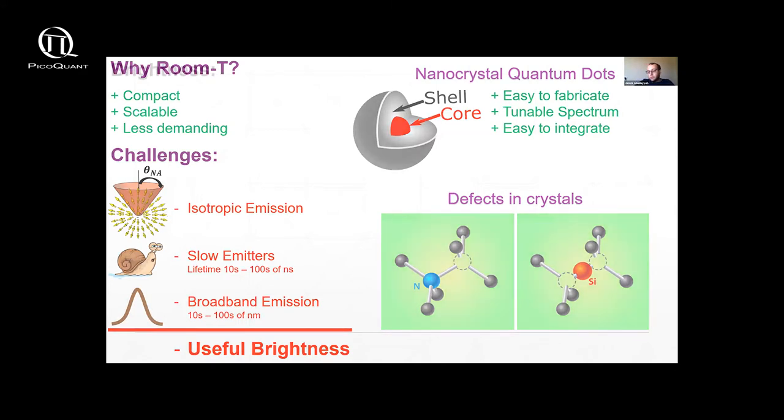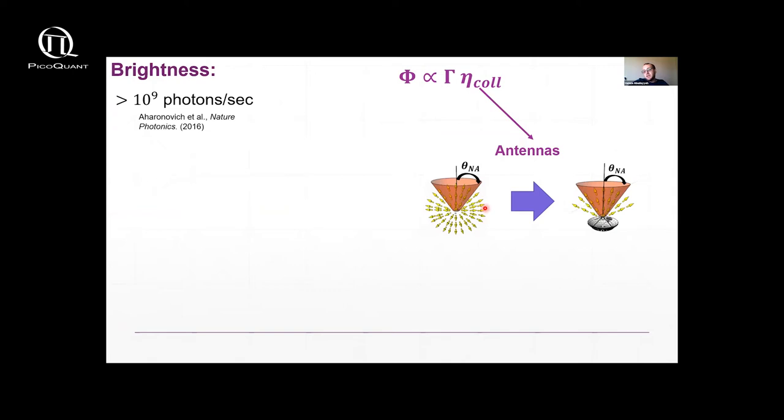So just to be concrete, when we say brightness we mean how many photons per second you can get out of this device. Usually you need something like 10^9 photons per second for useful quantum applications. This brightness depends on many factors but two main ones. The first is collection efficiency. You have a source emitting isotropically, you can only collect a certain fraction of these photons. So you can improve that by placing your emitter into some sort of antenna that will redirect the emission into a narrower region so you can collect more photons.